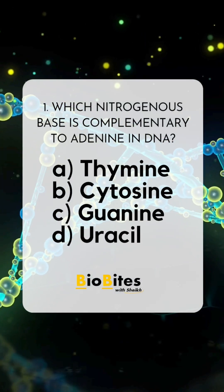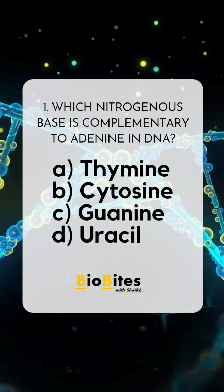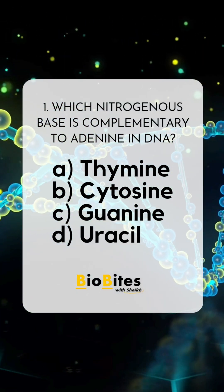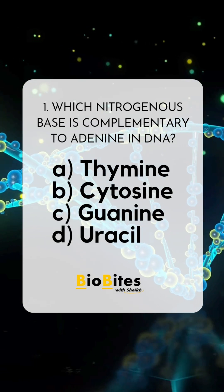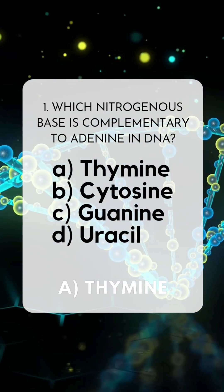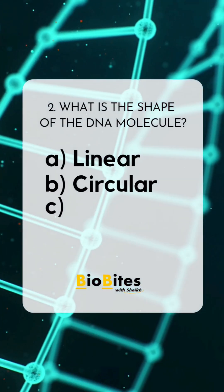Which nitrogenous base is complementary to adenine in DNA? A. Thymine. B. Cytosine. C. Guanine. D. Uracil. Correct answer: A. Thymine.